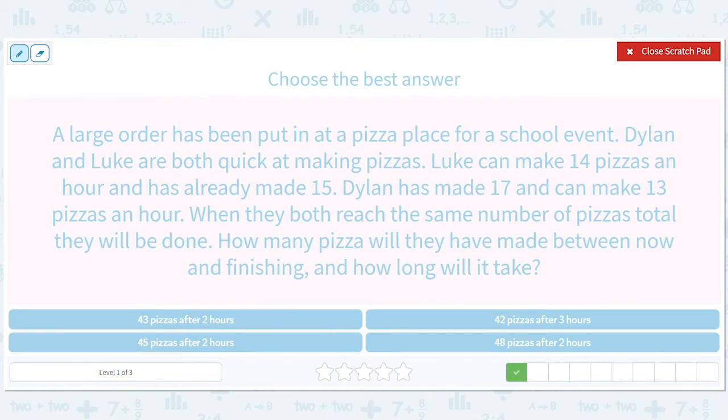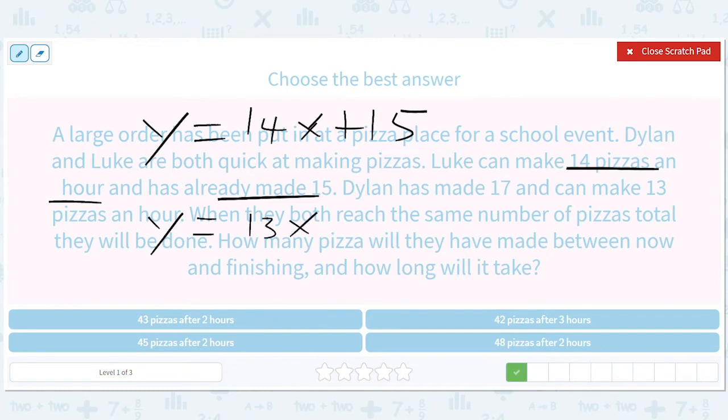I'm just going to skim this. Luke can make 14 pieces an hour and has already made 5. So that's telling you that this is the per hour thing. So that should get the X, right? So Y equals 14X and he's already made 15. So plus 15 flat. And Dylan has made 17 and can make 13 per hour, right? So they're trying to change the order up on you. So it's really 13X plus 17.